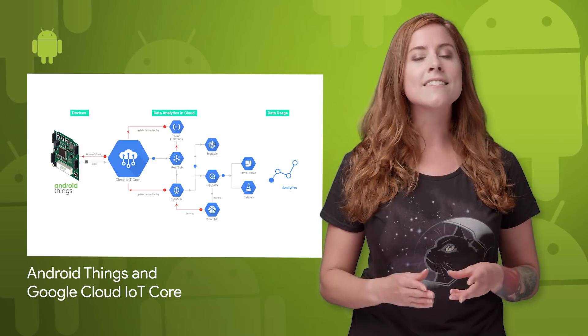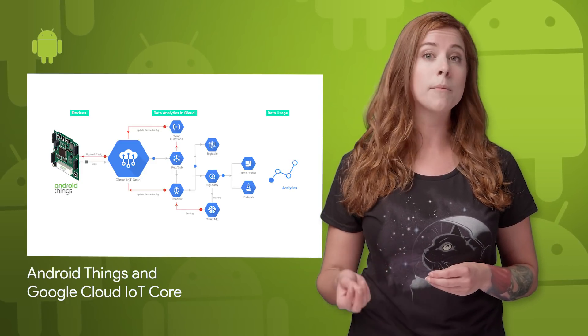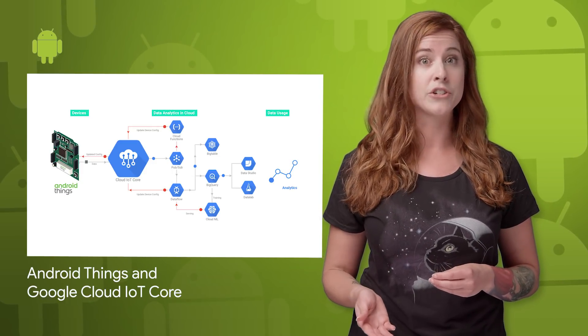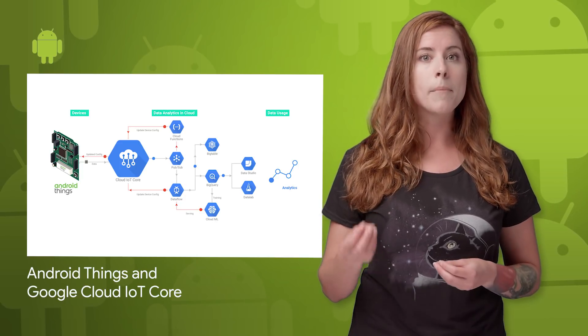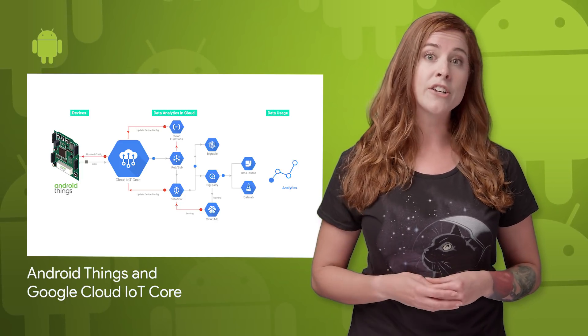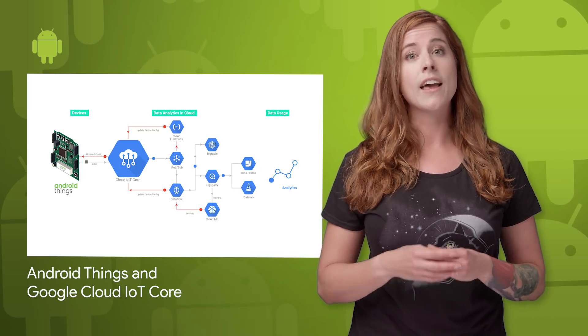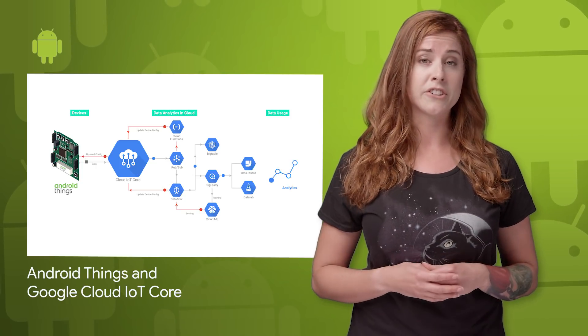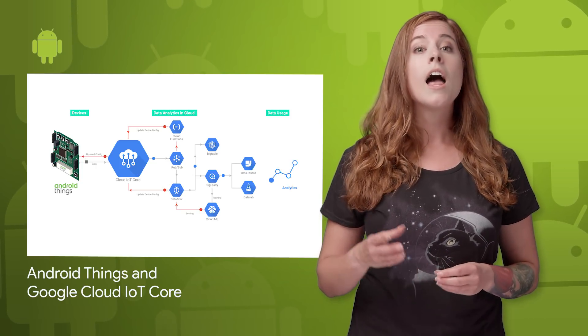We've released a client library to make it easy to use Google Cloud IoT Core from your Android Things devices. With just a few lines of code, you can easily connect to the IoT Core MQTT bridge, authenticate the device, publish device telemetry and state, subscribe to configuration changes, and handle errors and network outages. Sample code and a video are on the post.